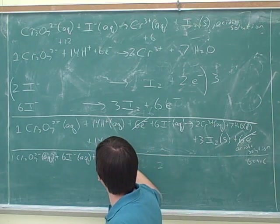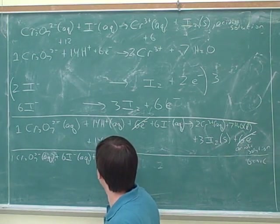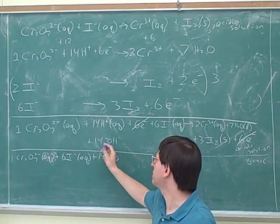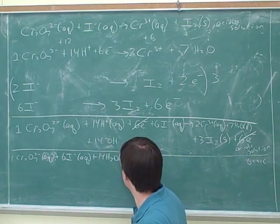So we'll add 14 hydroxides here. And what would that give us? That would give us 14 waters. 14 H pluses plus 14 hydroxides gives us 14 neutral waters.